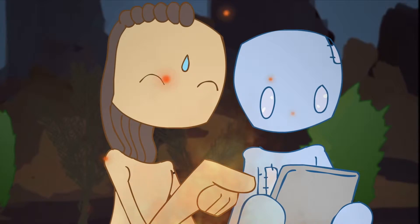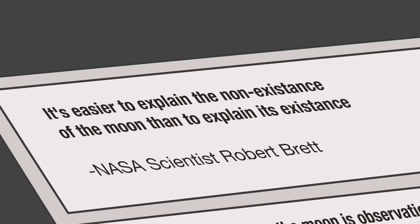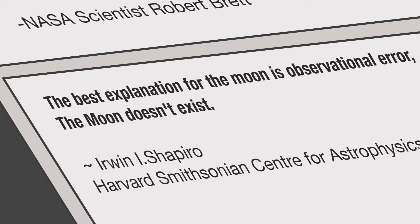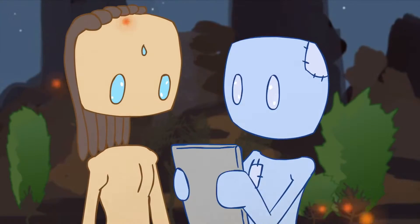Look at that quote from a NASA scientist: It's easier to explain the non-existence of the moon than to explain its existence. Here's another one: The best explanation for the moon is observational error. The moon does not exist. Oh, oh, here, read this part here.